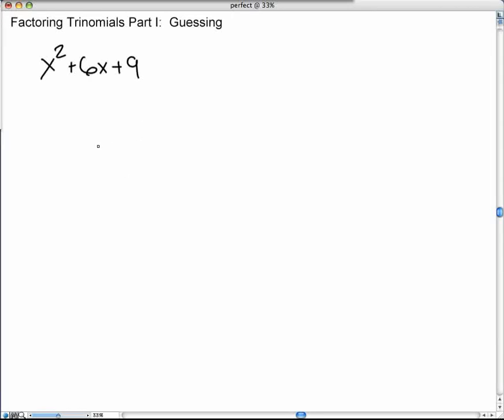This one has a special name to it. It's a perfect square trinomial, and you'll see why that's the case. Again, this is a trinomial, and I can factor it with two binomials. I could put an x here, an x here.